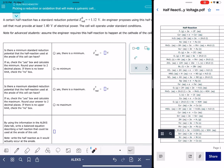In this video, I'm going to show you how to solve the ALEX problem called picking a reduction or oxidation that will make a galvanic cell work.